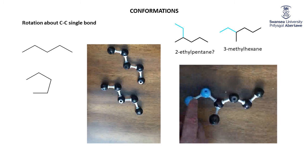So those are simple examples showing how you can move from one conformation to another — one appearance of a molecule to another appearance of the same molecule — simply by rotating around carbon-carbon single bonds.